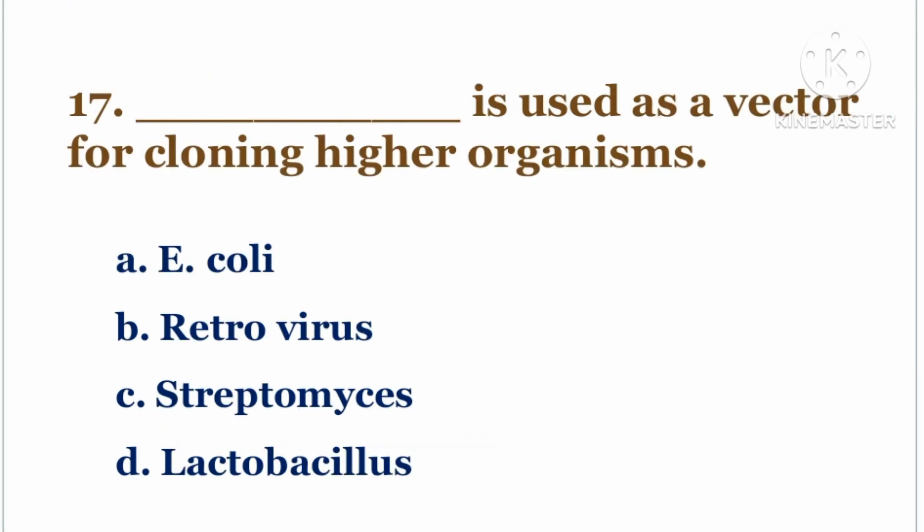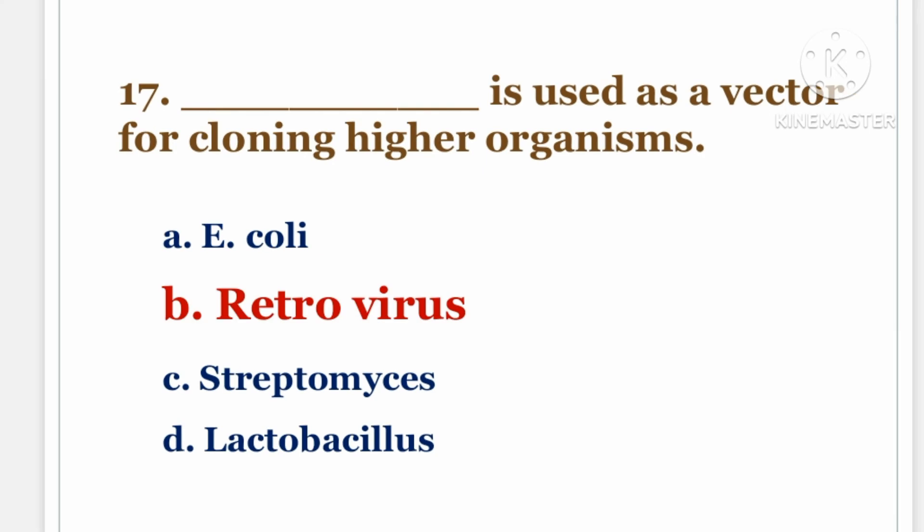Next question. DASH is used as a vector for cloning higher organisms. The options are A. E. coli, B. retrovirus, C. streptomyces, D. lactobacillus. The answer is B. Retrovirus.